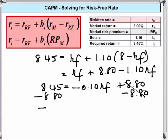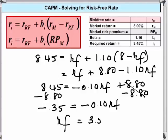We end up with a minus 0.35 is equal to a minus 0.10 risk free rate. Divide through both sides by 0.10 and we get risk free rate is 3.5.